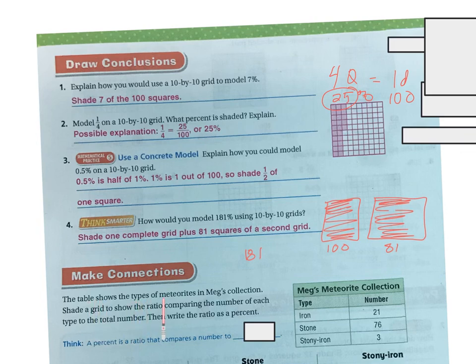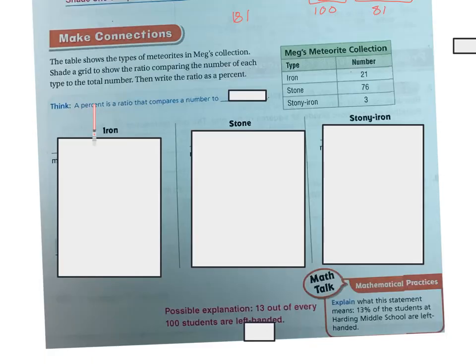The table shows the type of meteorites in Meg's collection. Shade a grid to show the ratio comparing the numbers of each type to the total number and then write a ratio. Remember to think a percent is a ratio that compares a number to 100.